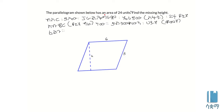The parallelogram shown below has an area of 24 square units. Find the missing height. The area of 24 units square equals 7 times height.